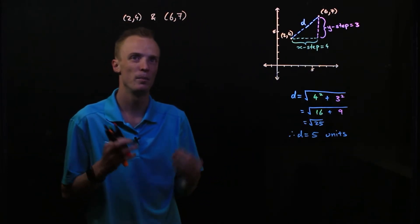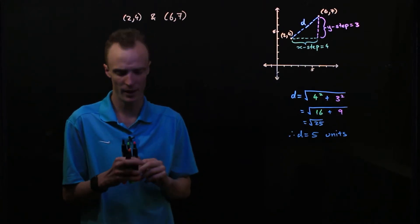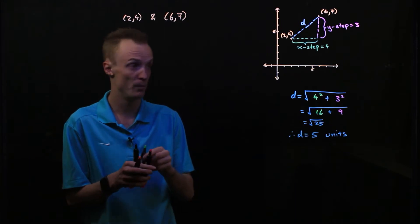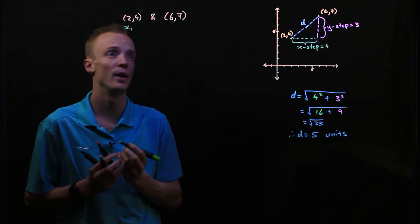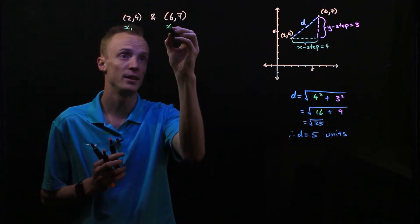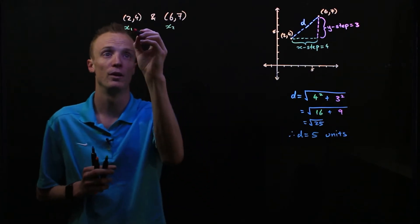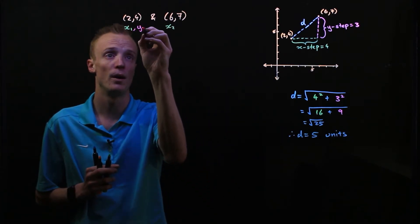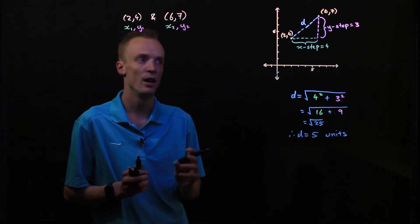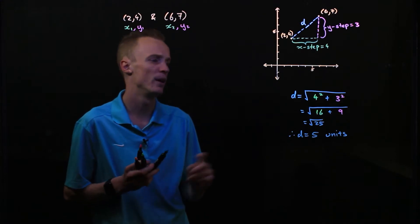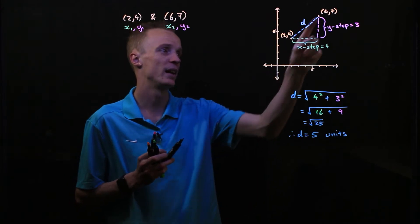What we want to do is break these coordinates down into their x-values and their y-values. So labeling them — my x-values are 2, which I'll call x1, and 6, which I'll call x2. And for our y-values, the 4 value is y1, and the 7 value is y2.